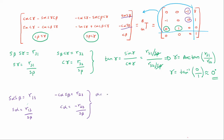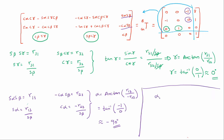In a similar manner, we can calculate our alpha as being equal to arc tan of R13 over negative R23, which would be tan inverse where R13 is negative 1 and R23 is 0. Tan inverse of negative infinity is approximately equal to minus 90 degrees. So we can summarize our results as having alpha equal to minus 90, beta equal to plus or minus 90, and gamma equal to 0. So these are our angles of rotation.